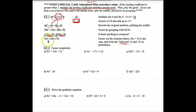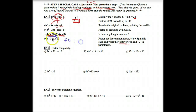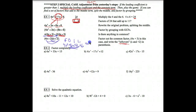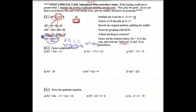Once you have factored the GCFs by grouping, you take the parentheses that was identical and it becomes one of your two parentheses in the final factored form. The other parentheses is what I call the leftovers — the x and the plus 2 come down into my other parentheses. So my final answer is 4x plus 3 times x plus 2. If I FOIL that back out to check: first, 4x times x is 4x squared; outsides, 4x times 2 is 8x; insides, 3 times x is 3x; lasts, 3 times 2 is 6. That gives me 4x squared plus 11x plus 6, which is exactly my original problem.